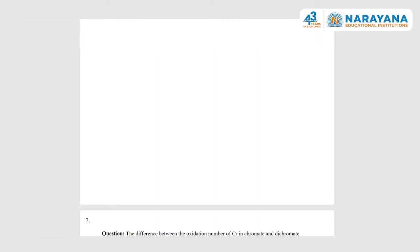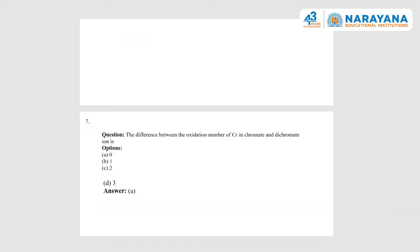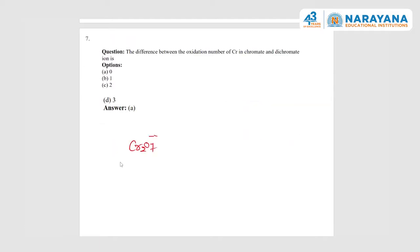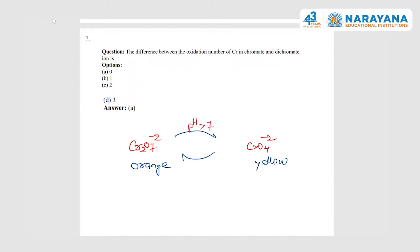Next question: the difference between oxidation numbers of chromium in dichromate and chromate. Dichromate is Cr₂O₇²⁻ and chromate is CrO₄²⁻. In the NCR book, chromate is a yellow-coloured compound. Maintaining pH above 10, dichromate converts to chromate; below pH 7, chromate converts back to dichromate. Calculating the oxidation number: in both dichromate and chromate, chromium has an oxidation state of +6. Hence the difference is zero, and option A (zero) is correct.